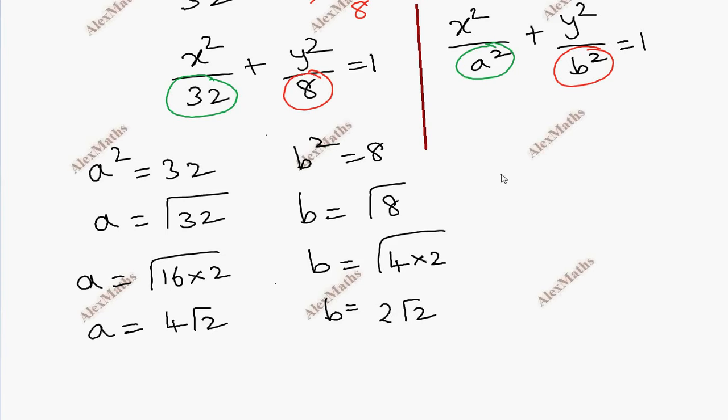The parametric form: x = A cos θ, y = B sin θ. If x₁, y₁ is the point, then x₁ = 4√2 cos θ.